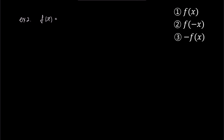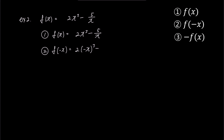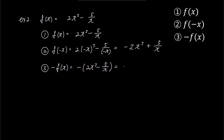In the second example, let's consider f(x) is 2 times x to the power of 3 minus 5 over x. For representation 1, f(x) is 2 times x cubed minus 5 over x. For representation 2, f of negative x is 2 times negative x to the power of 3 minus 5 over minus x, which simplifies to negative 2x to the power of 3 plus 5 over x. For representation 3, negative f(x) is minus 2x cubed minus 5 over x, which can be expressed as minus 2x cubed plus 5 over x.